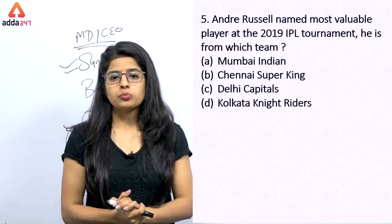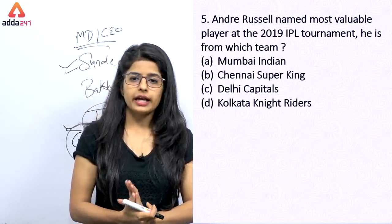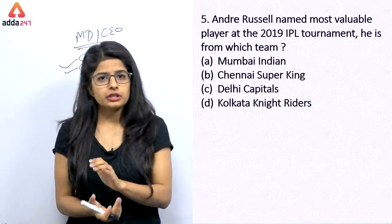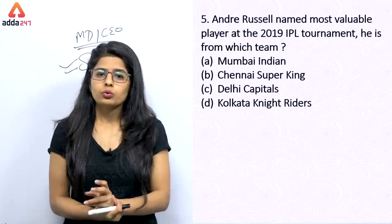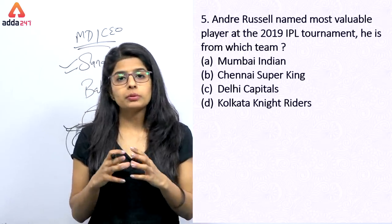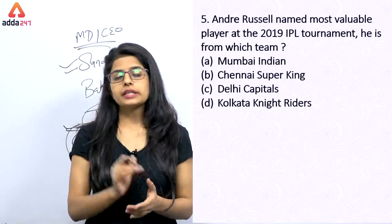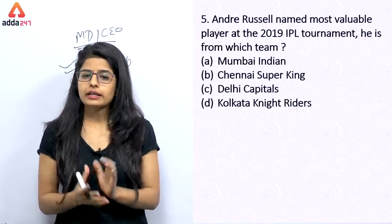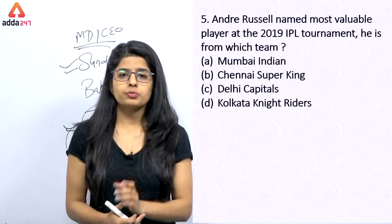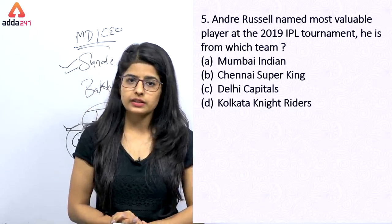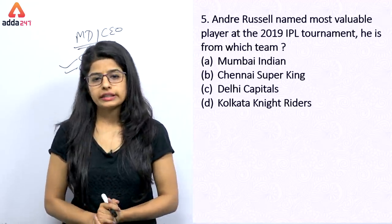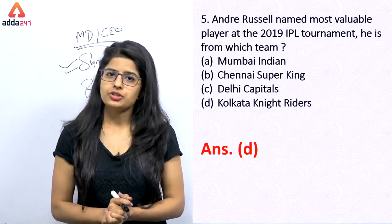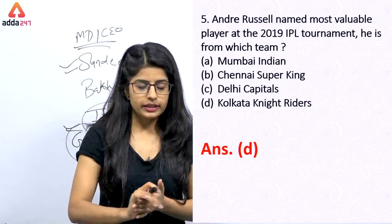Andrew Rochelle was named the most valuable player at the 2019 IPL tournament. You are asked which team he belongs to, not which country. This IPL tournament was won by Mumbai Indians. But Andrew Rochelle belongs to option number D — that is Kolkata Knight Riders. Keep this in mind. Let's see our next question.